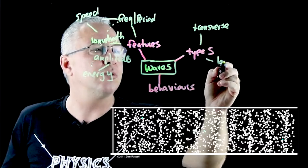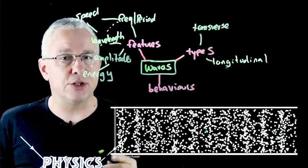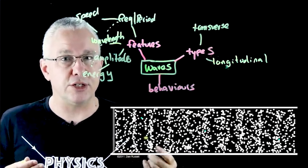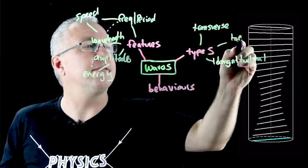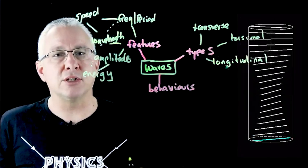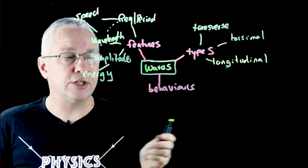We also have the longitudinal wave, and the longitudinal wave is where the particles are moving in the same direction as the direction of the energy or of the wave. But then there's also a torsional wave where the particles are actually moving in a rotational fashion and yet perpendicular to the direction of the wave.